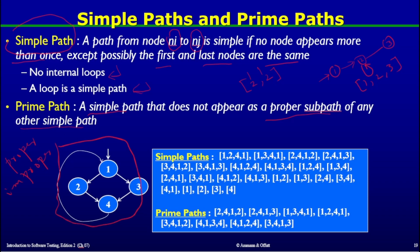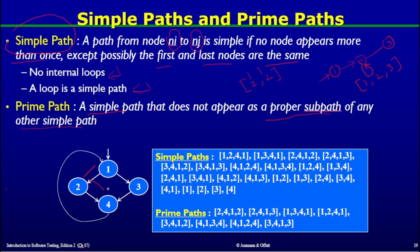Now looking at the graph on the left bottom of this slide, we want to compute simple paths. We need to write paths such that there are no internal loops. Starting from node one, going to node two, then node four, then back to node one gives us a simple path with no repeating internal nodes. Similarly, traversing the other branch — one, three, four, back to one — is another simple path with only the first and last nodes repeating.